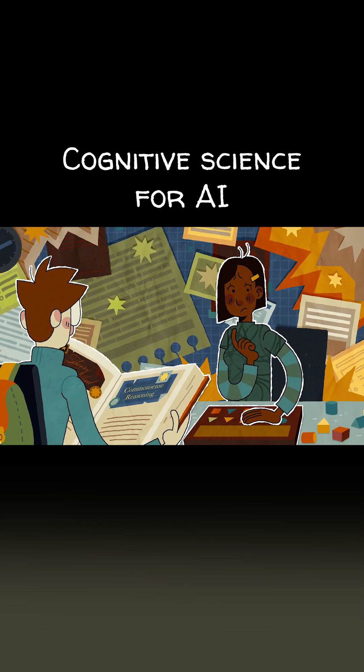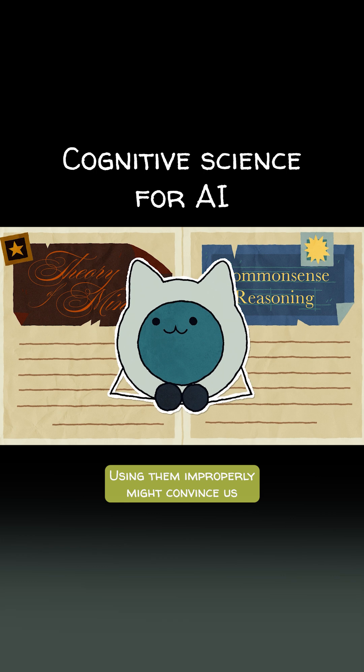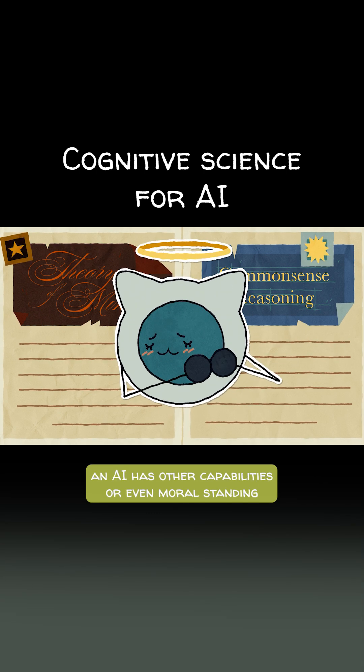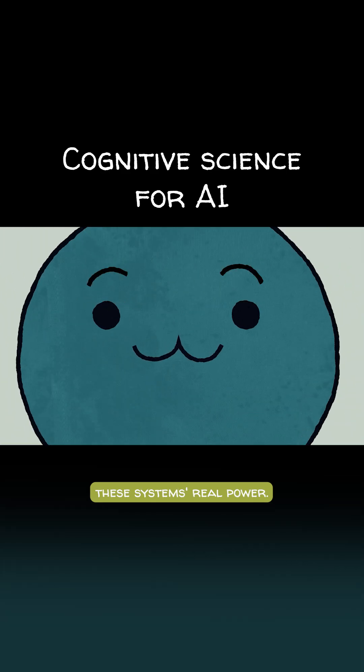Defining these terms rigorously has helped develop better ways of assessing them. Using them improperly might convince us an AI has other capabilities, or even moral standing, when it's unwarranted. Or it might conceal these systems' real power.